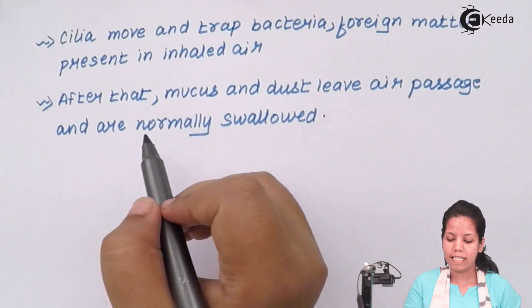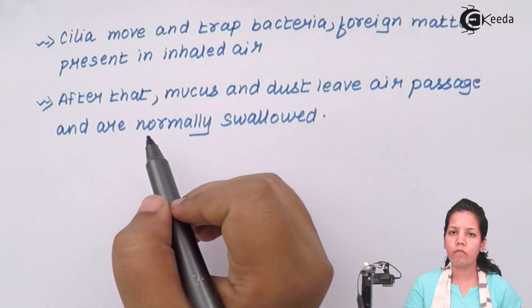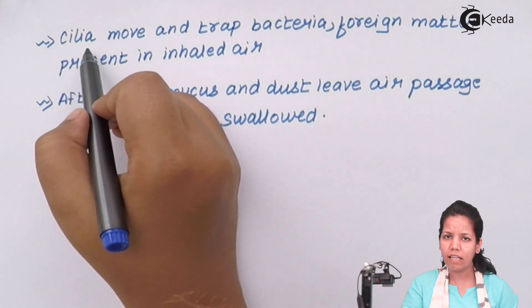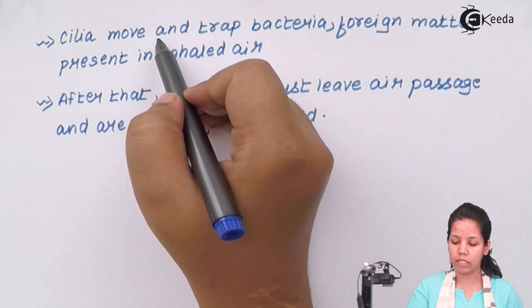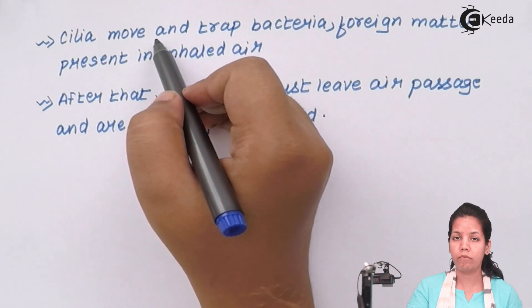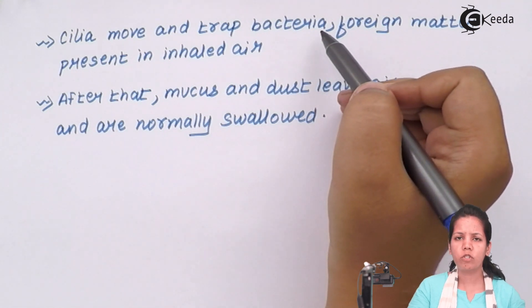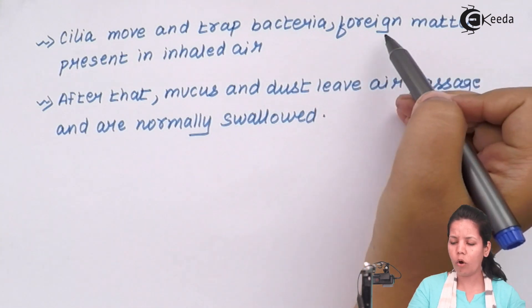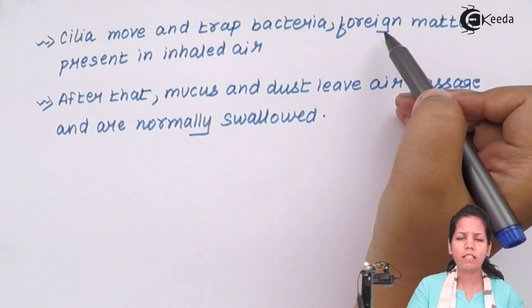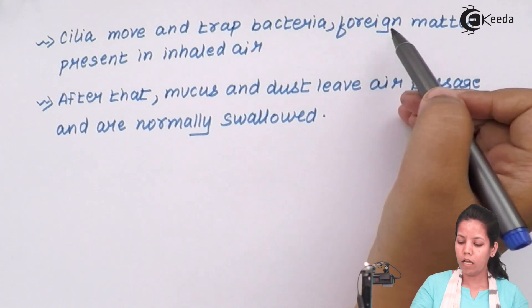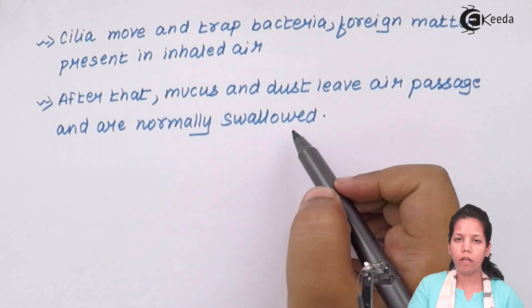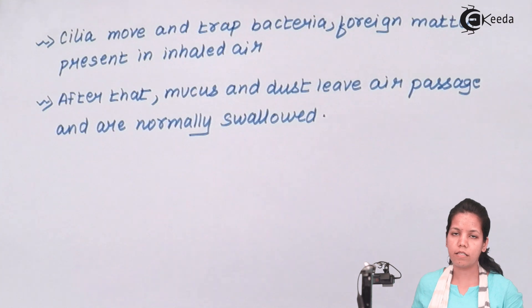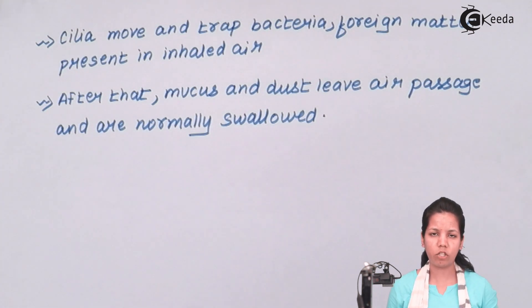Basically trachea is lined by ciliated epithelium. This cilia, or ciliated epithelium — brush-like borders — help in the movement of mucus, and this mucus with the help of cilia traps bacteria which could be present in your inhaled air, or foreign particles such as dust, pollen grains, or minor soil particles inhaled while respiring. After that, mucus and dust particles leave the air passage and are normally swallowed. So once air passes down your trachea or windpipe, this is the function that takes place.